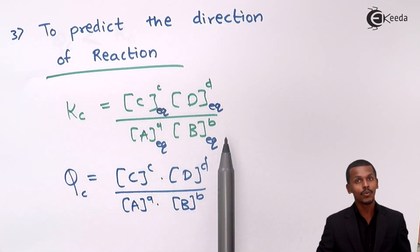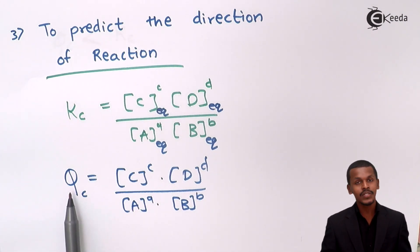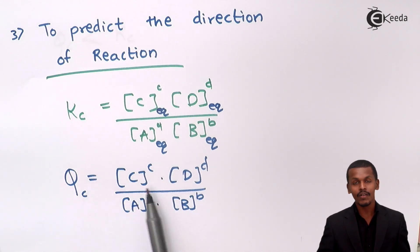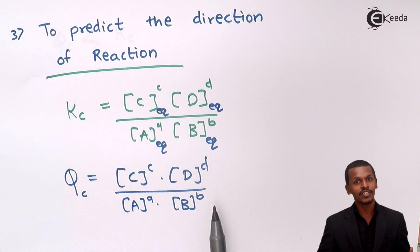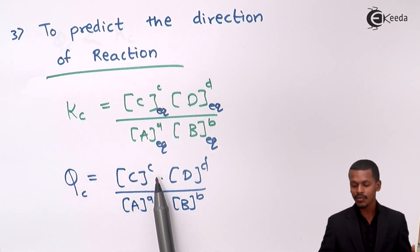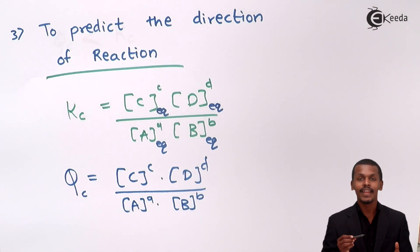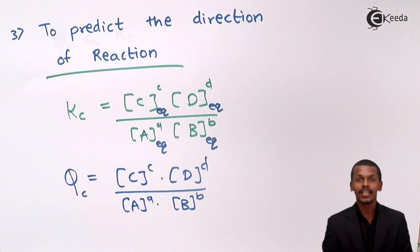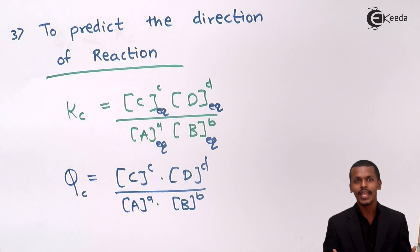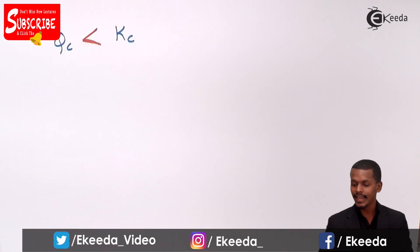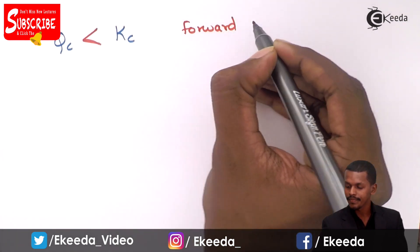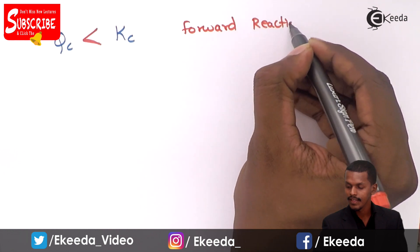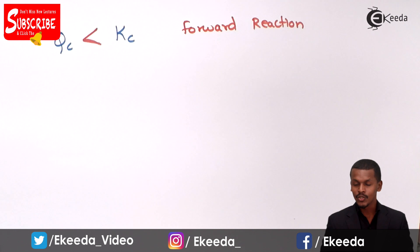If Kc is greater than Qc, then Qc is small, meaning the product concentration is less and the reactant concentration is more. Since the concentration of reactants is high, the rate of the forward reaction will be greater, and the reaction will move forward — from left to right. This indicates a forward reaction.